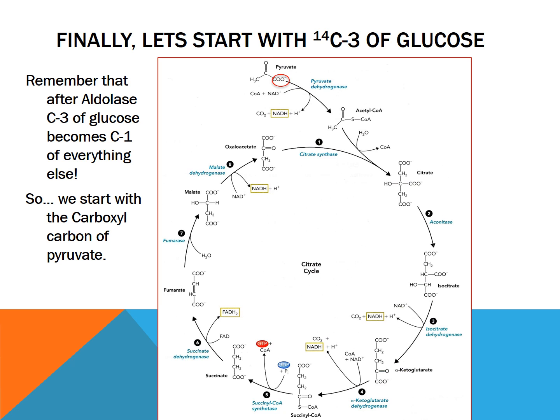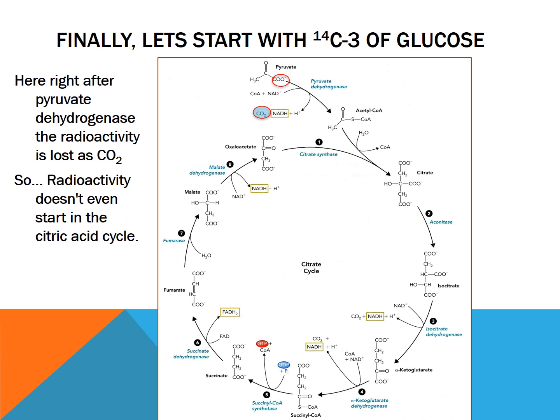Now for carbon three, it's the simplest one. When pyruvate reacts with pyruvate dehydrogenase, remember that NADH, a proton, and carbon dioxide are made — and that carbon dioxide being made is from pyruvate. So that initial carbon three of glucose, which is carbon one of pyruvate, is going to be lost completely and not even enter into the citric acid cycle. It doesn't even get into citrate or any of the products of the citric acid cycle. I hope you guys found that helpful. If you have any questions, just let me know. Thank you guys.